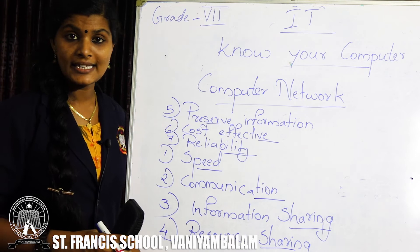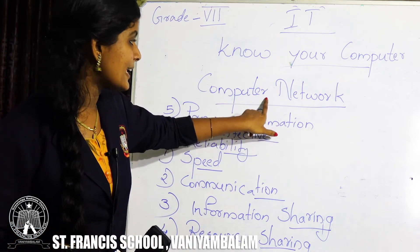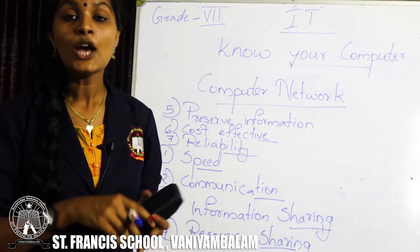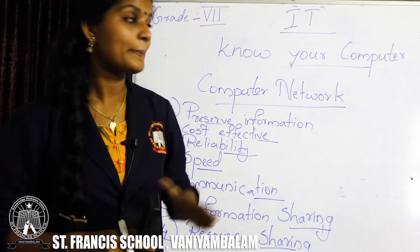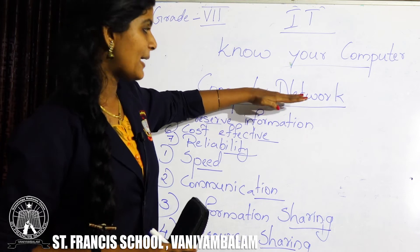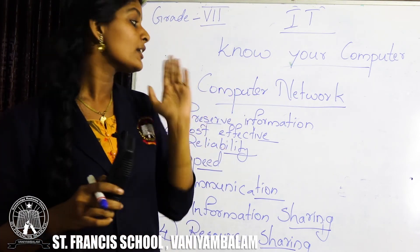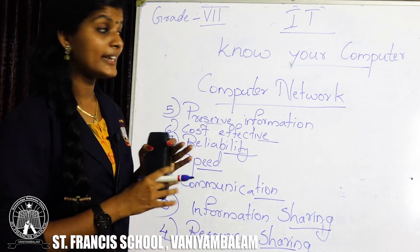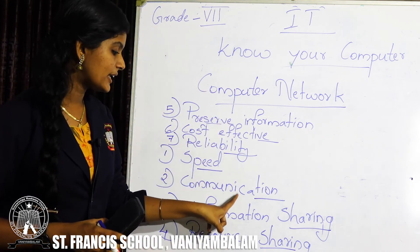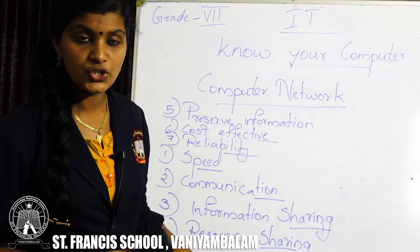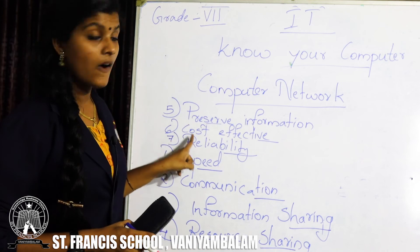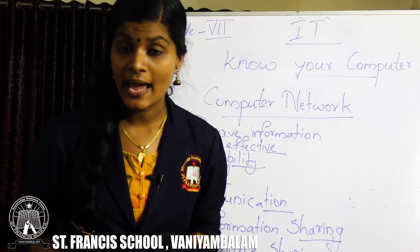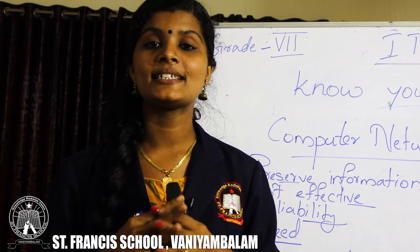So once again, computer network means the interconnection of two or more computers and some hardware devices through a communication channel. The main purpose is to facilitate easy communication and for sharing resources. The seven advantages of computer network are: speed, communication, information sharing, resource sharing, preserve information, cost effective, and reliability. Hope all of you understood the definition of computer network and its seven advantages.